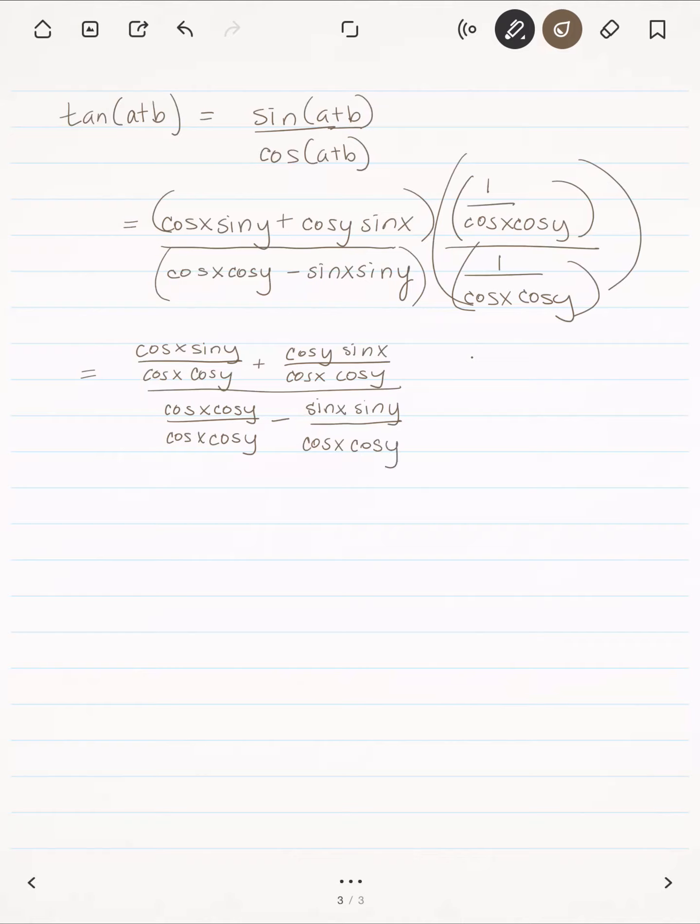All right, let's cancel out the things we can. Everything's a factor with these fractions, so the cosines will cancel out there. Here, the cosines of y will cancel out. Here, everything will cancel out, and that will just equal 1. And we'll work from there.